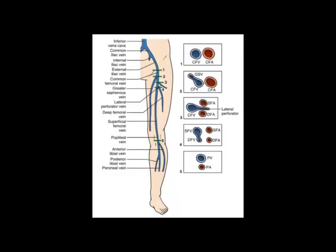Moving over to a diagram of the patient's left leg — lifted with thanks from Dr. Arndtfield's excellent textbook — we have the five key points of vascular bifurcation that need to be interrogated, shown on the patient's leg as well as in cross-section. Just distal to the inguinal fold, you have the common femoral vein lying medial to the common femoral artery.